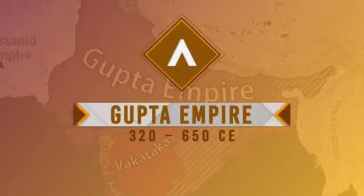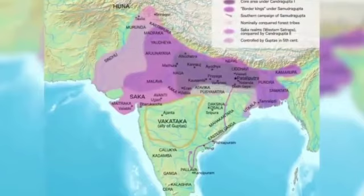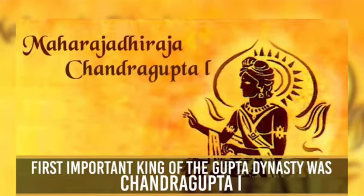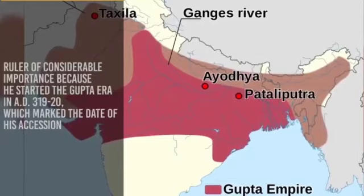Now let us learn about the Gupta dynasty. After the Mauryans, the Guptas ruled India. The Gupta dynasty is a prominent one in the history of India, ruling from 320 to 650 CE. The founder of the Gupta dynasty was Sri Gupta. The first important king was Chandragupta I, who married a Lichavi princess from Nepal, which strengthened his political position. He started the Gupta era in AD 319-20, marking the date of his accession.